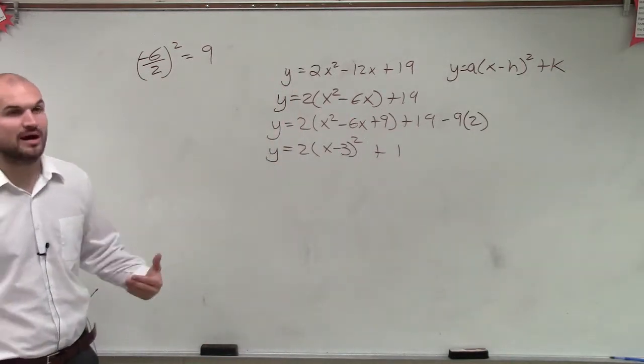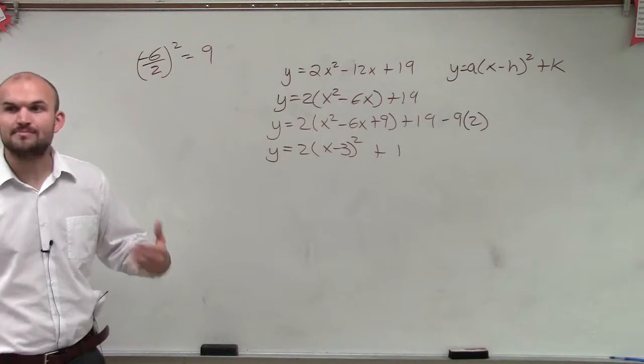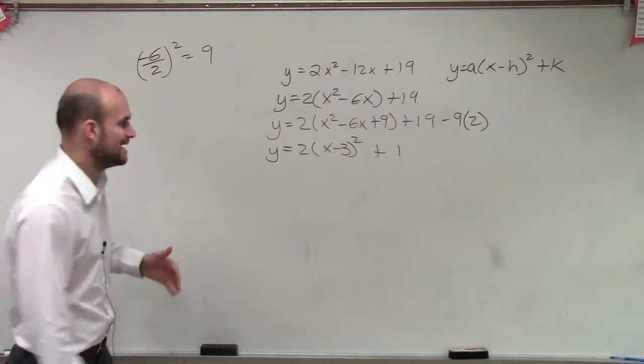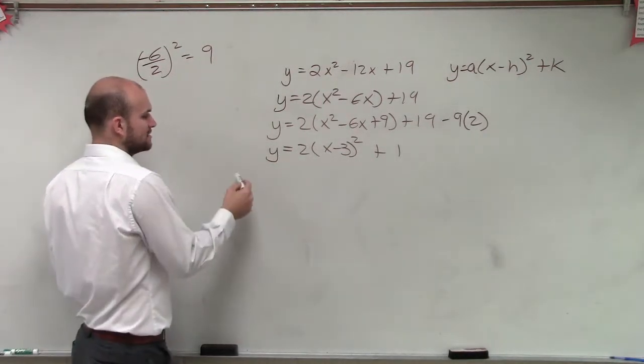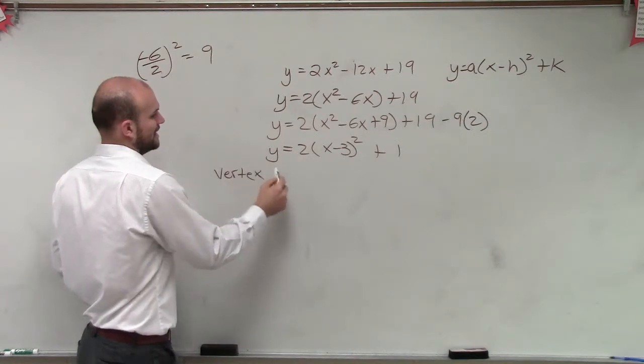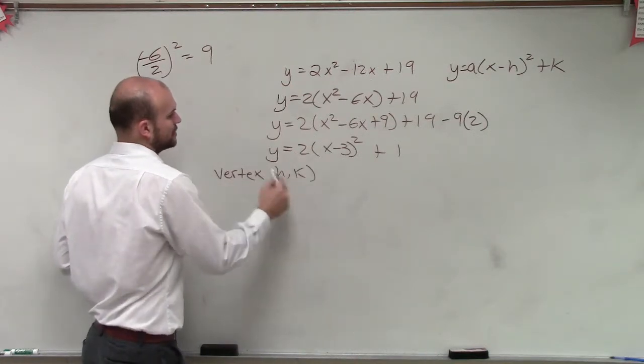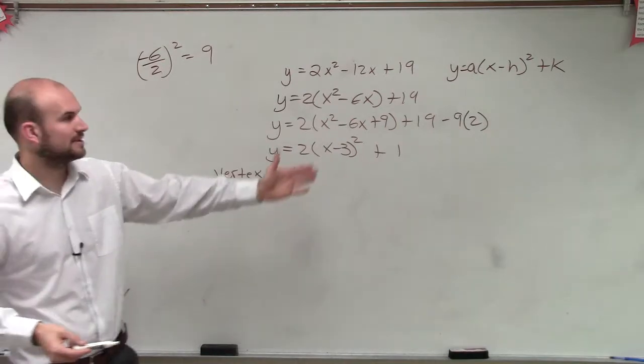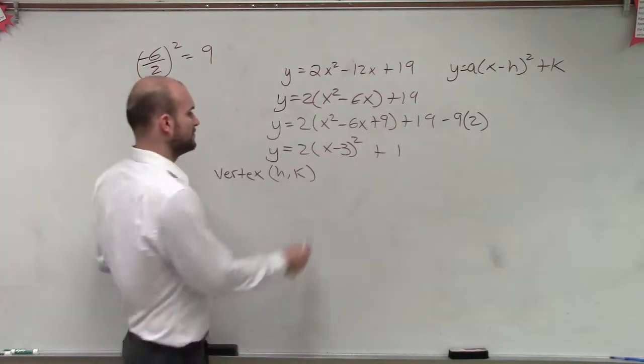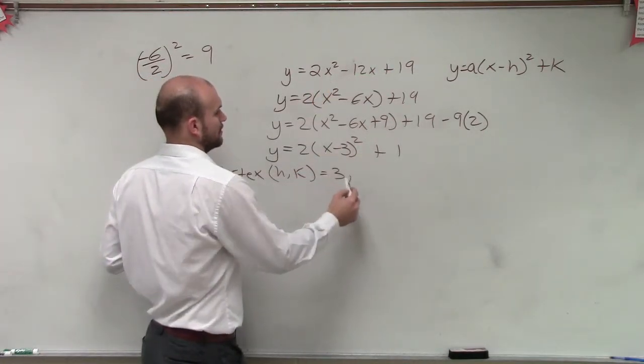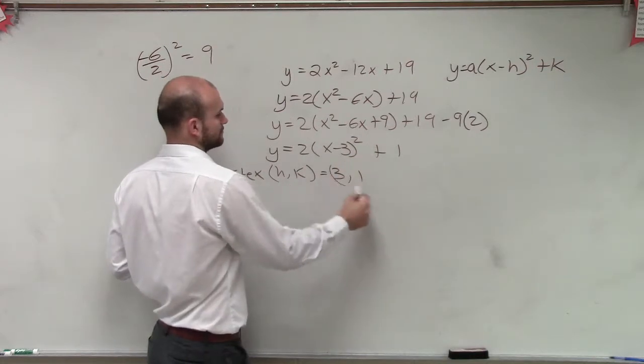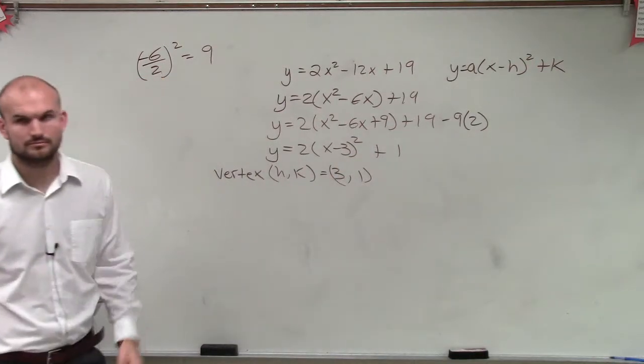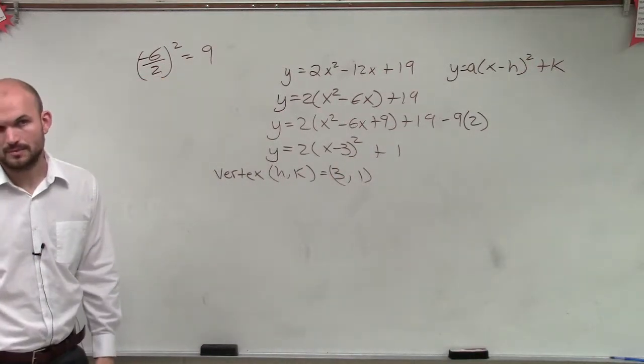Now, I look at this problem and I determine what is my a and my h and my k. Remember, your vertex is h comma k. So you look at this problem and you say, what is my h comma k? Well, my h is positive 3 and my k is 1.